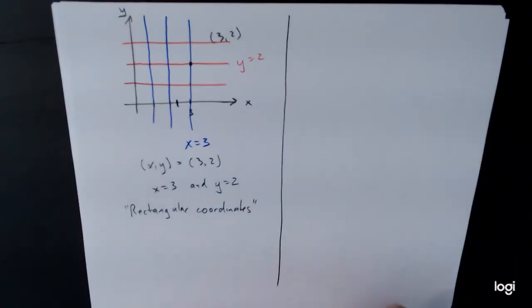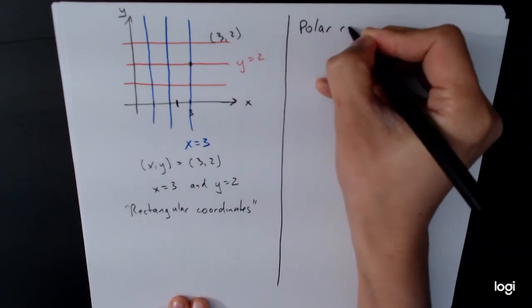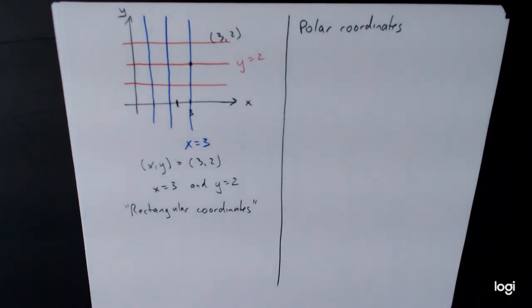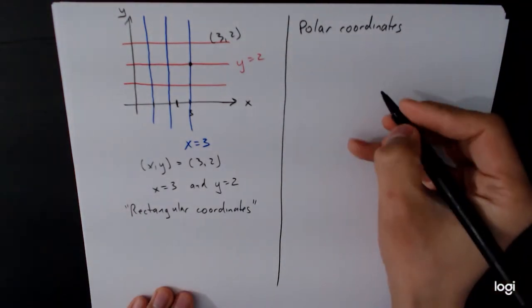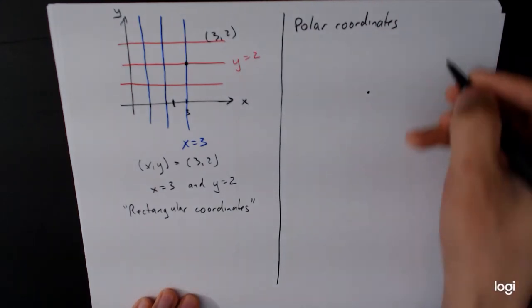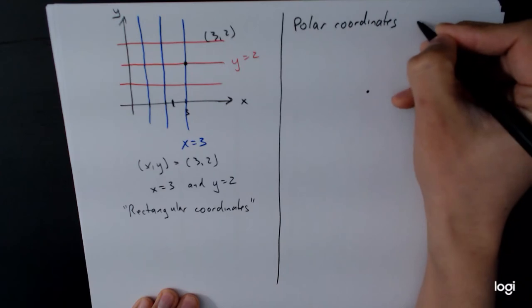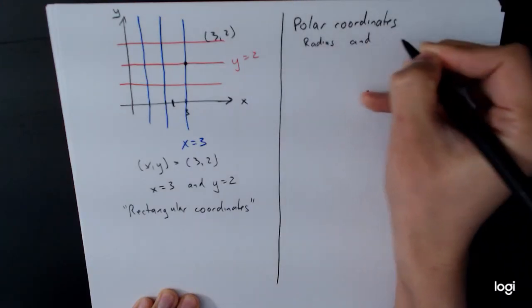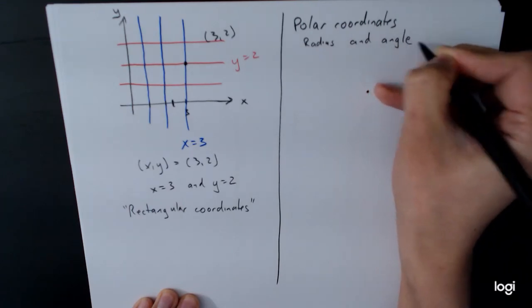So when we talk about polar coordinates, we're talking about circles as our primary shape. So here's the origin. I just put a little dot there. And what we have is we have two different things happening. We have the radius and angle. Let's write this up here. Radius and angle.